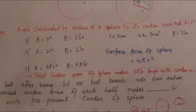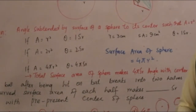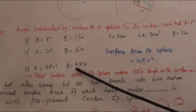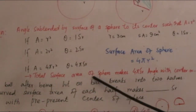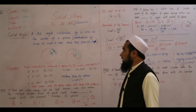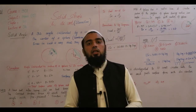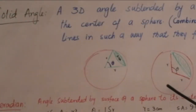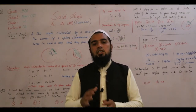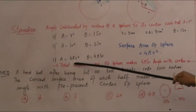ہمیں پتا ہے کہ sphere کا پورا surface area 4πr² ہے، اور 4πr² کے لیے ہم نے steradians نکالے ہیں جو ہیں 4π steradian. So we can say: the total surface area of sphere makes 4π steradian angle with the center, or any interior point of the sphere. یہ پورا sphere کا area center کے ساتھ 4π steradian angle بنائے گا — چاہے interior point کہیں پر بھی ہو.